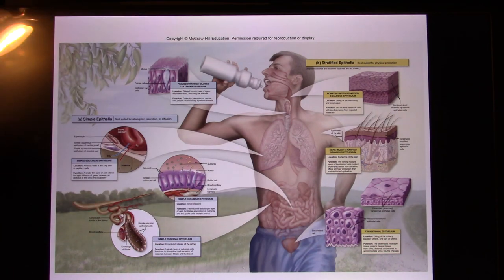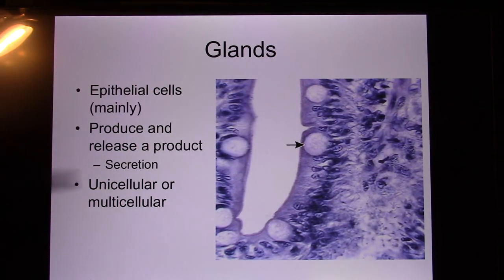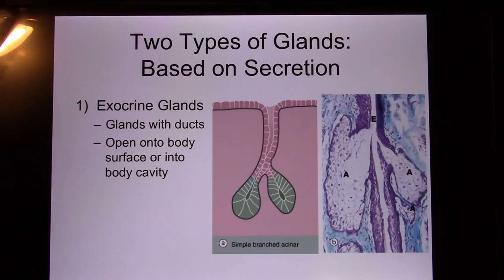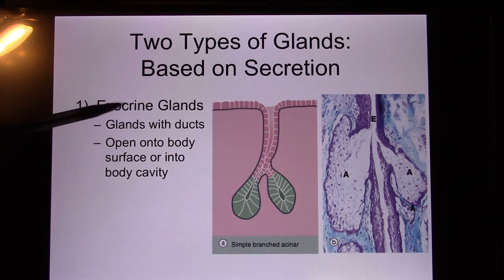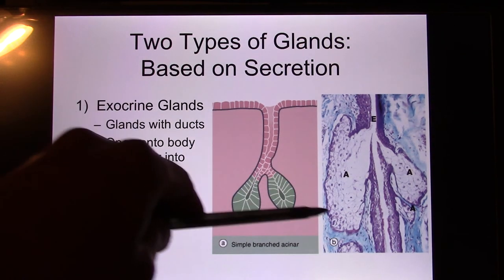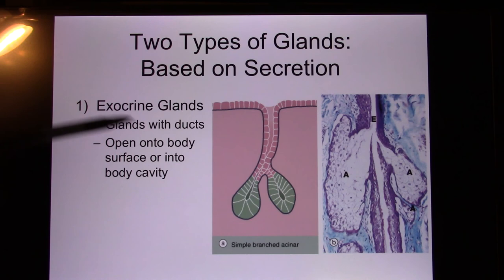Your body has many epithelial tissues. Now let's look at a specialized epithelial tissue called a gland — glands produce something. They can be unicellular, like goblet cells, or multicellular. If they have a duct and release through that duct to the outside, we call them exocrine glands. Examples include sweat glands, sebaceous glands, oil glands, and digestive enzyme glands that secrete into the GI tract.